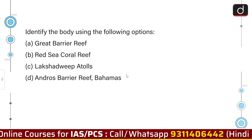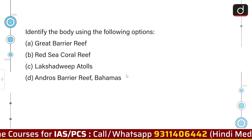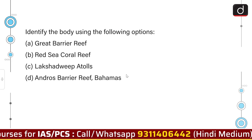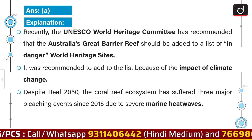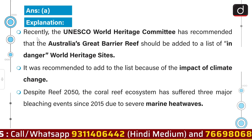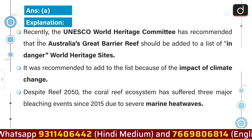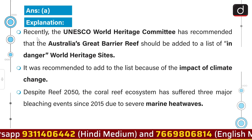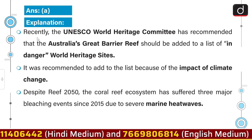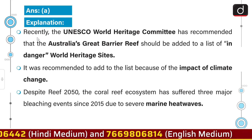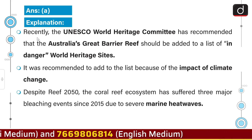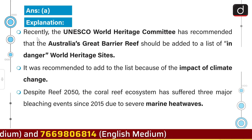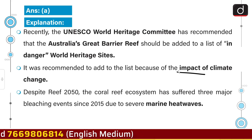So we have to identify the body using the given options. Many of you have answered it correctly. The correct answer to this question is option A — Great Barrier Reef. Recently, the UNESCO World Heritage Committee has recommended that Australia's Great Barrier Reef should be added to a list of endangered World Heritage Sites. It was recommended to add to the list because of the impact of climate change.